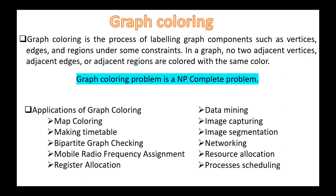Graph coloring problem is an NP-complete problem. Graph coloring is used in several applications. Some of these are map coloring, making timetable, bipartite graph checking, mobile radio frequency assignment, register allocation, data mining, image capturing, image segmentation, networking, resource allocation, process scheduling, and others.